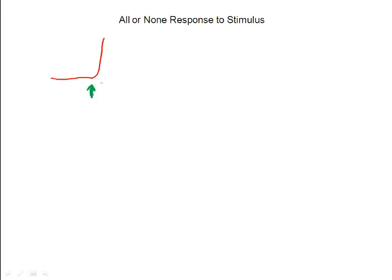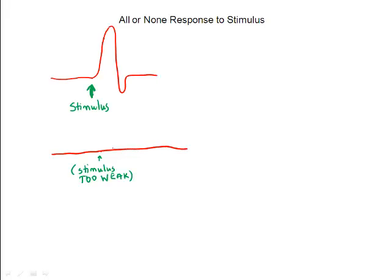The second neuron phenomenon we'll take a look at is the all-or-none response to stimulus. In order for the neuron to begin its wave of depolarization, a certain level of stimulus must be reached. The required intensity of the stimulus for depolarization varies from person to person. If this threshold is not reached, the wave of depolarization will not take place. A greater stimulus than that required to initiate the wave of depolarization does not increase the action potential — the action potential is still plus 40 millivolts.